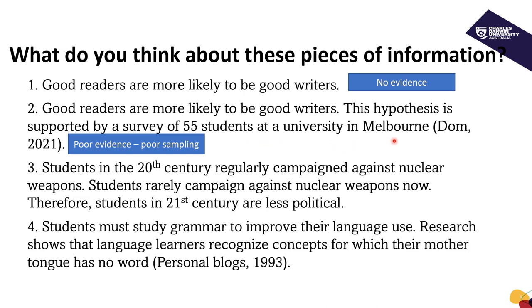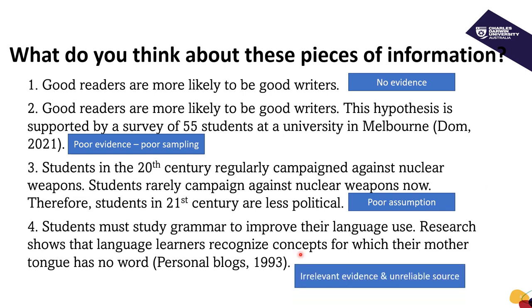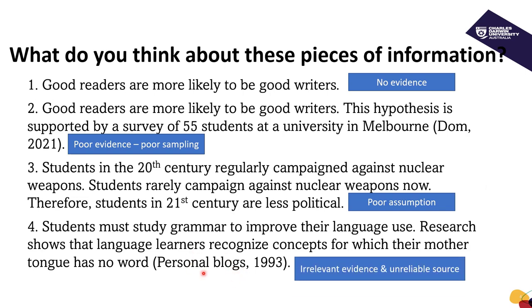But the second example is still not reliable because the sample is poor. In the third example there is a poor assumption. Now let's look at the last example. Pay attention to the citation here. This is not an academic source and also the evidence that they provided is not relevant.